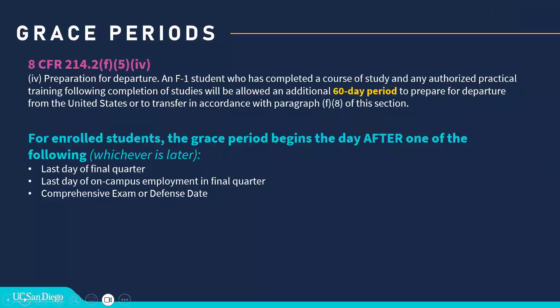We have the federal regulations outlining when a student's grace period begins. The grace period is a period after your program completes to either prepare for departure or take additional steps to remain in the U.S. lawfully. The grace period is not on your Form I-20, so it takes a bit of thinking to understand when your specific grace period may begin. For students, the grace period begins the day after one of the following dates, whichever is later: your last date of enrollment in your final quarter, your last day of on-campus employment in your final quarter, or if you're a graduate student with a comprehensive exam or defense date in your final quarter, it could also be that date.